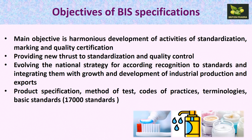Now we will see the main objectives of BIS specifications. The important main objective behind BIS specifications was the harmonious development of various activities related to standardization, marking and quality certification. It provides new thrust to standardization and quality control. It is the national strategy according to which standards are recognized, there is integration between all parameters, and there is growth and development of industrial production and exports. Basically, product specification, method of test, code of practices, terminologies, and basic standards are all present in BIS specifications.